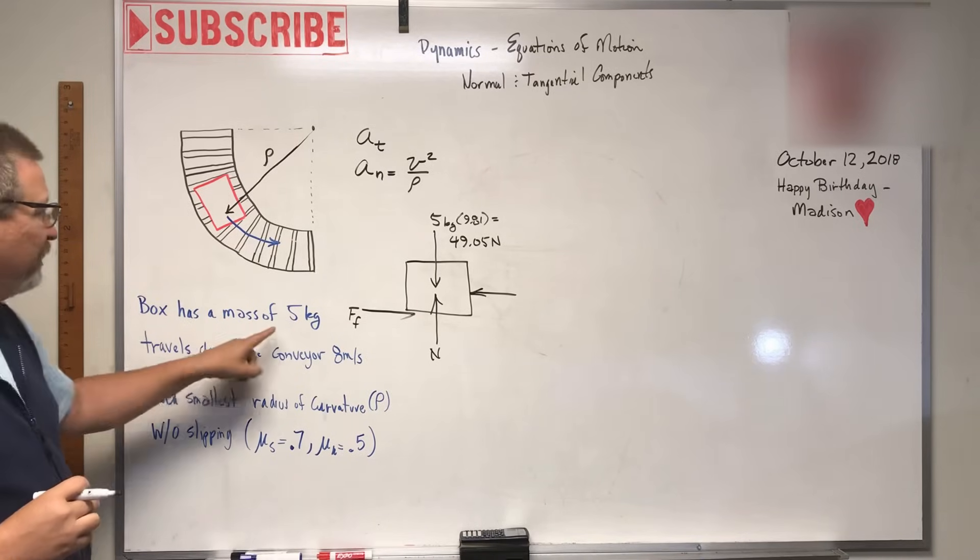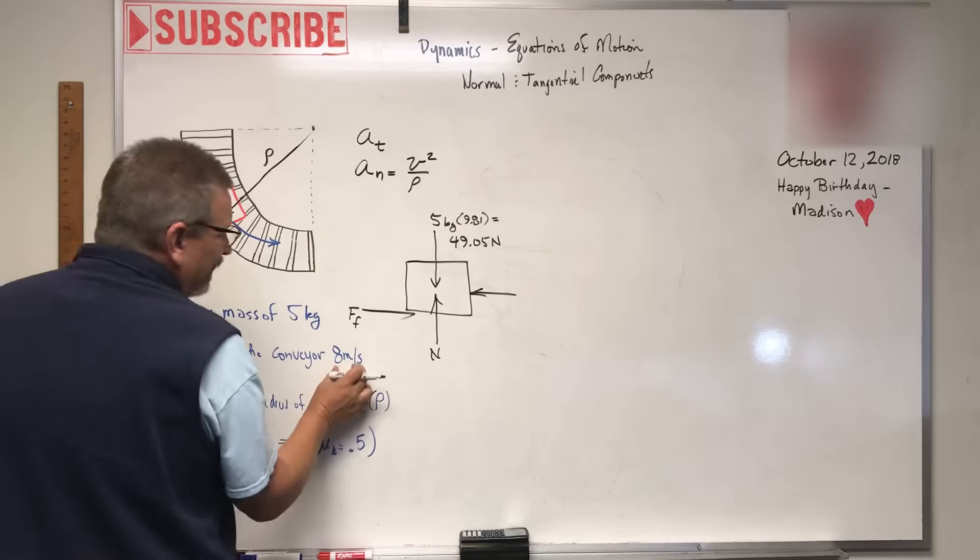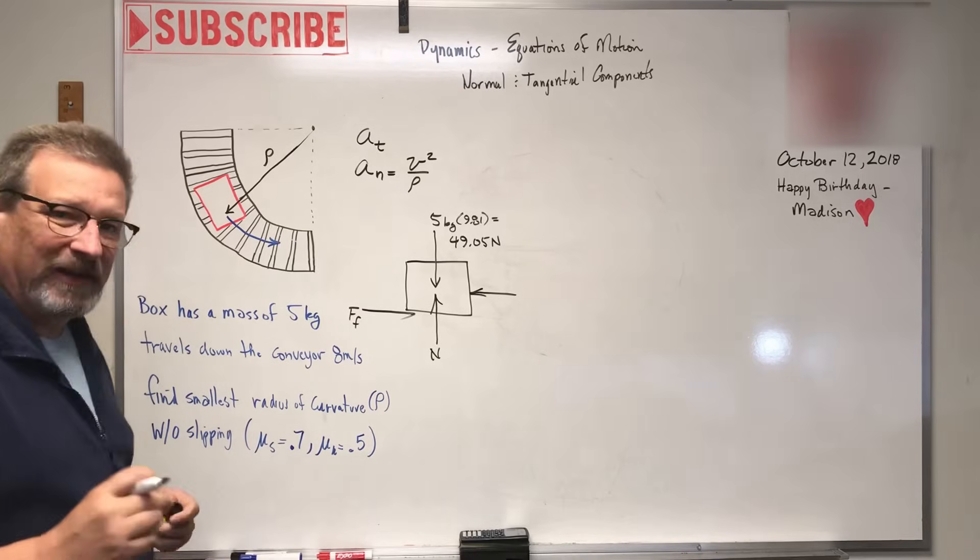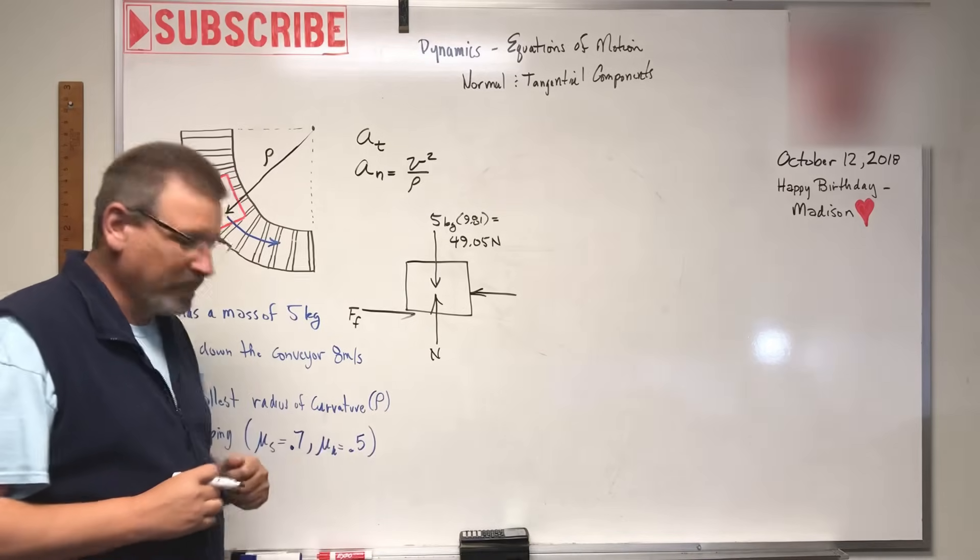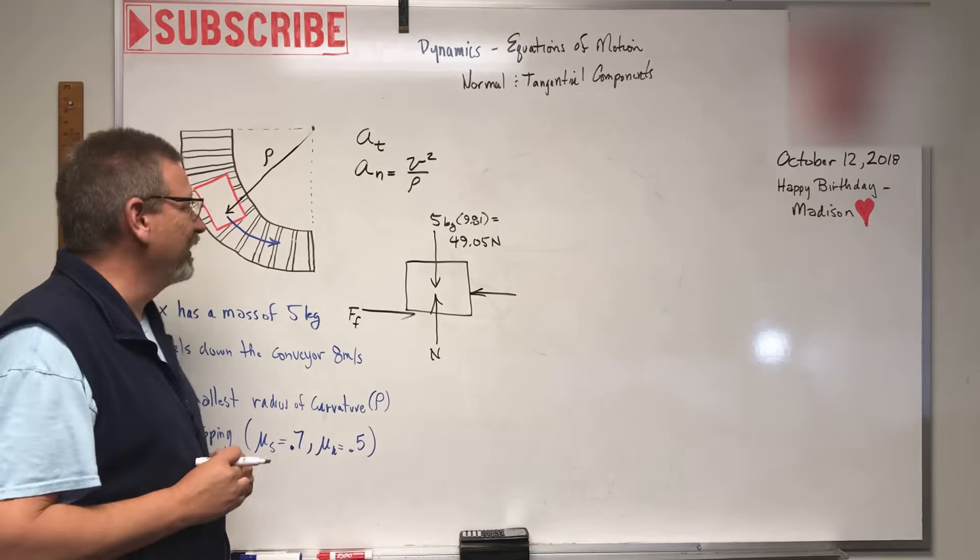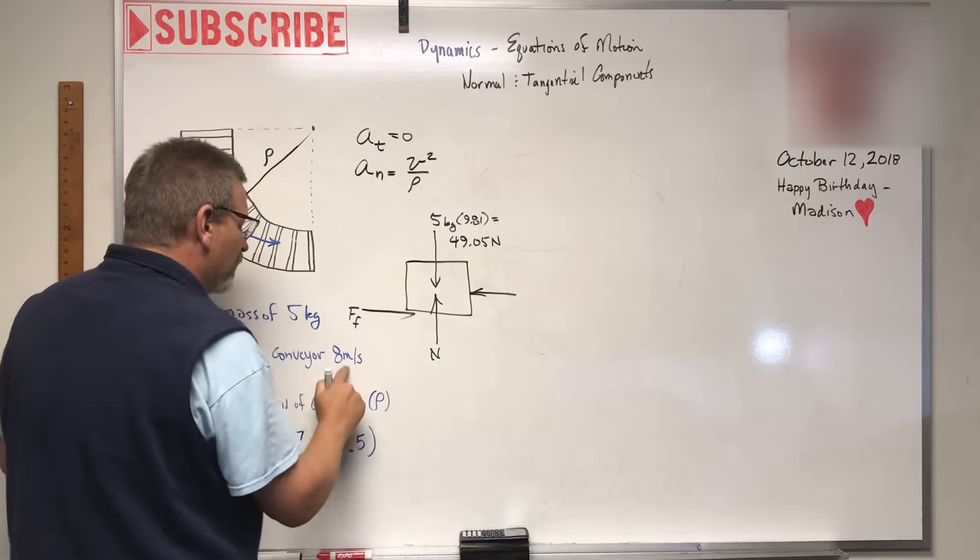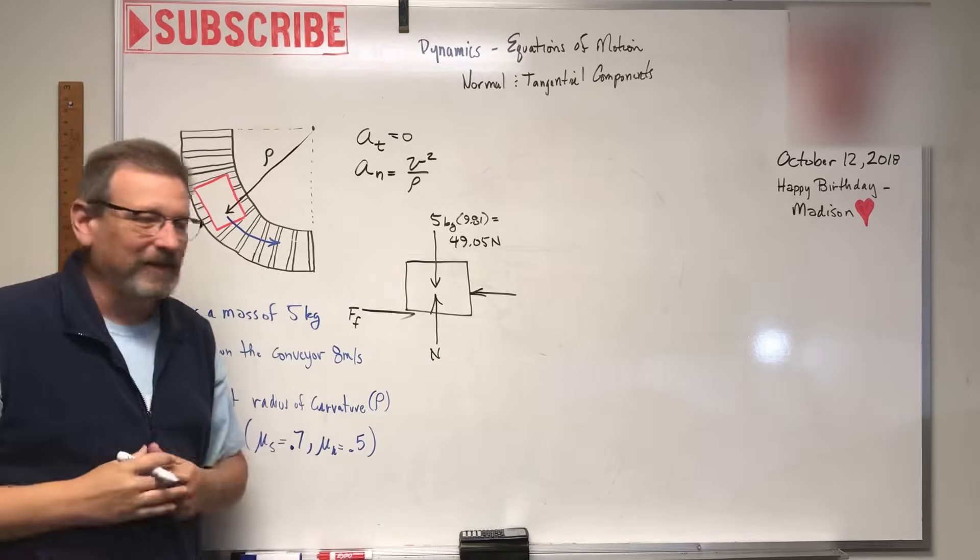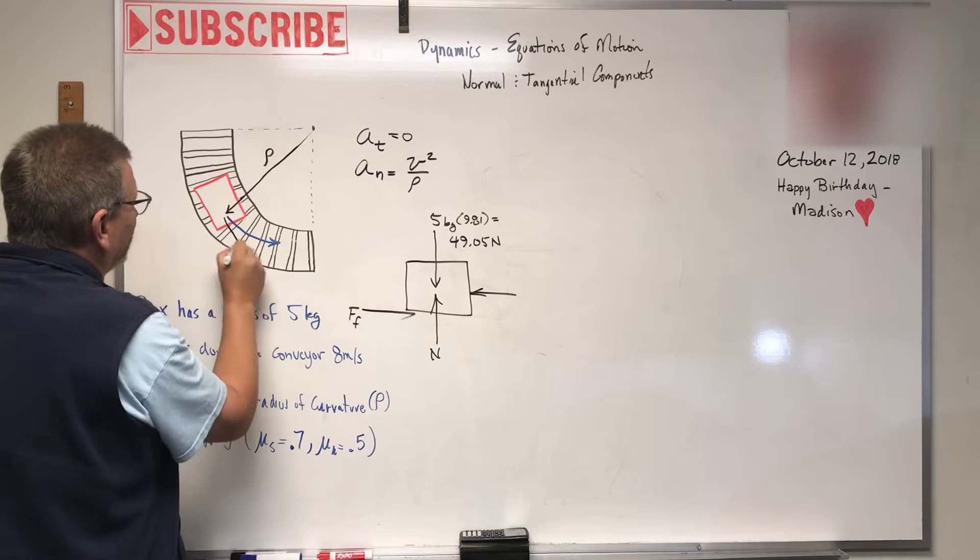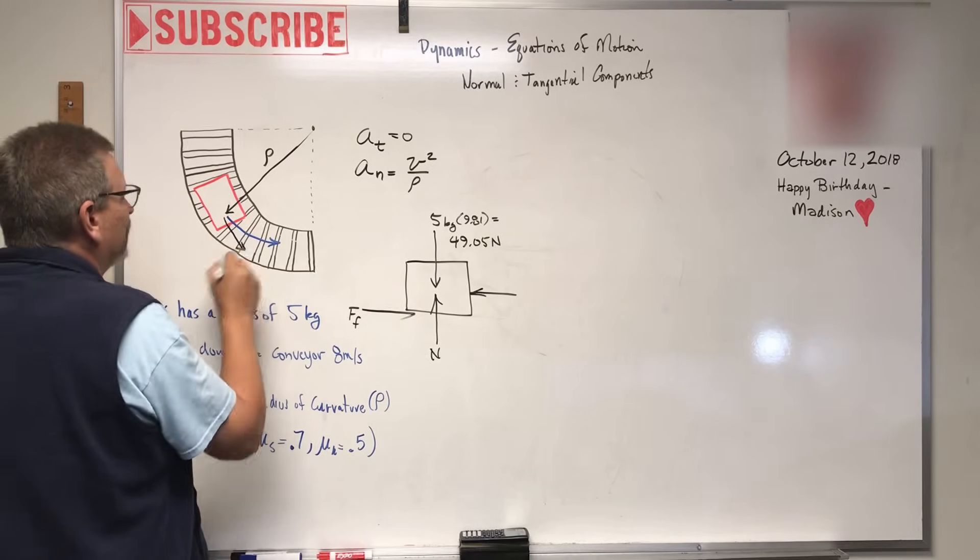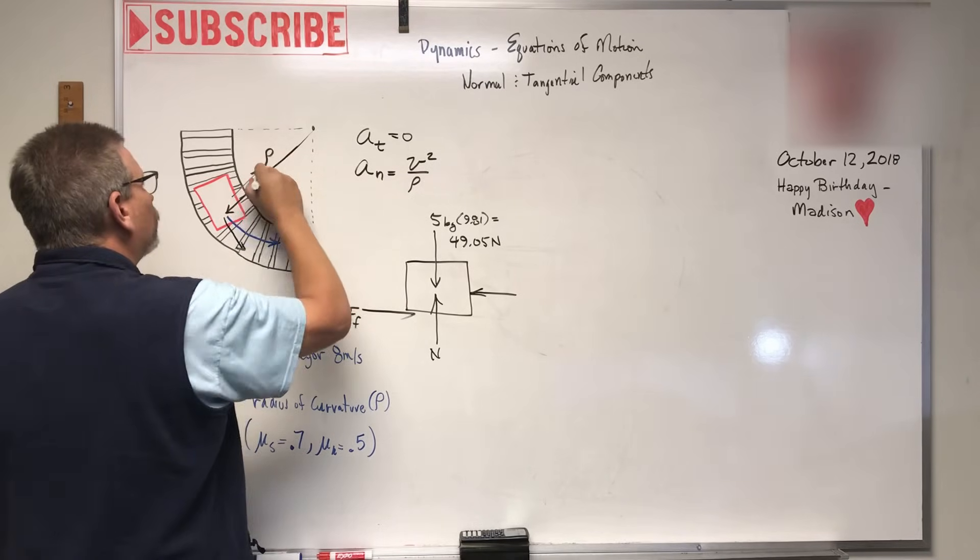The box has a mass of five kilograms and travels down the conveyor at eight meters per second. What is its tangential acceleration? Well, it's zero. If it's traveling at a constant velocity, that means it doesn't have any acceleration, so that component is zero.